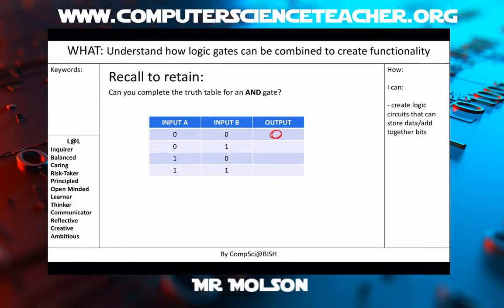If we have a look at the next one, we've got input A is off and input B is on, so that'll be off. We've got input A is on and input B is off — that's the inverse — so that's also off. And then input A is on and input B is on, so that is when our AND gate will be on. That's the truth table for an AND gate — hopefully you remember that from last week.